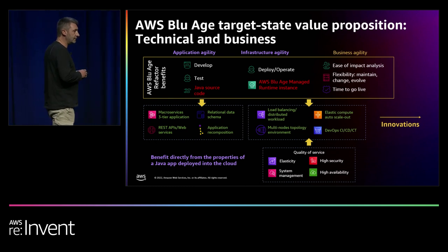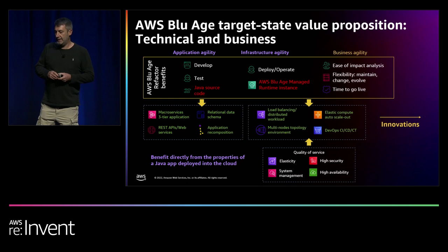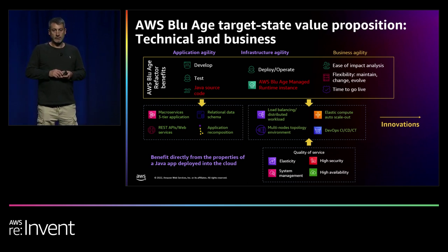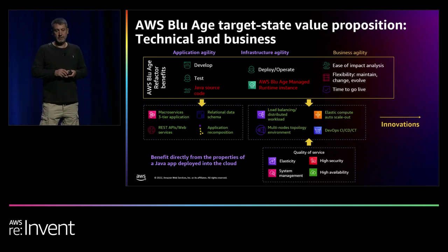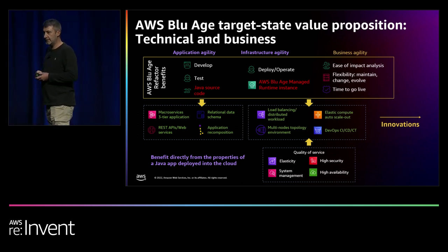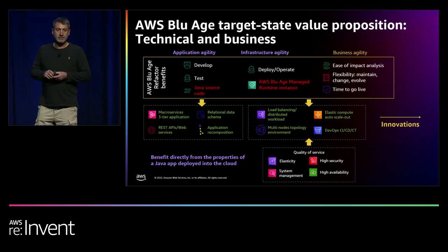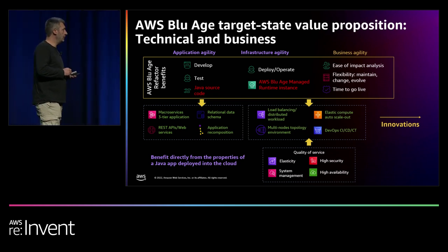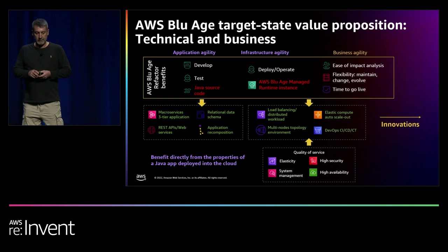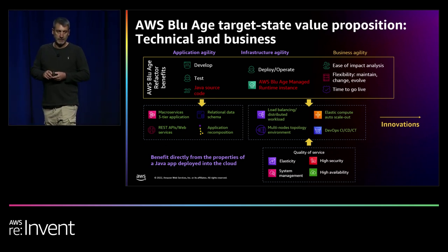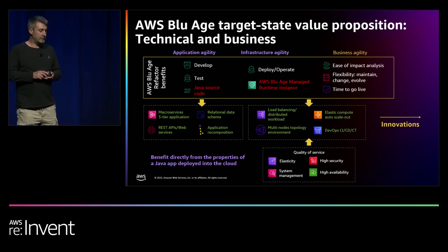What we sell is not a tool, not skills, not a line-by-line transformation, not a license. We sell the result of the transformation process: the Java application implemented as a three-tier application on the Spring framework, sitting on top of a relational database, distributable into a multi-node topology over the cloud, capable of exposing any kind of feature in a modern protocol manner — easing the integrability of that application with already modern applications across your portfolio.